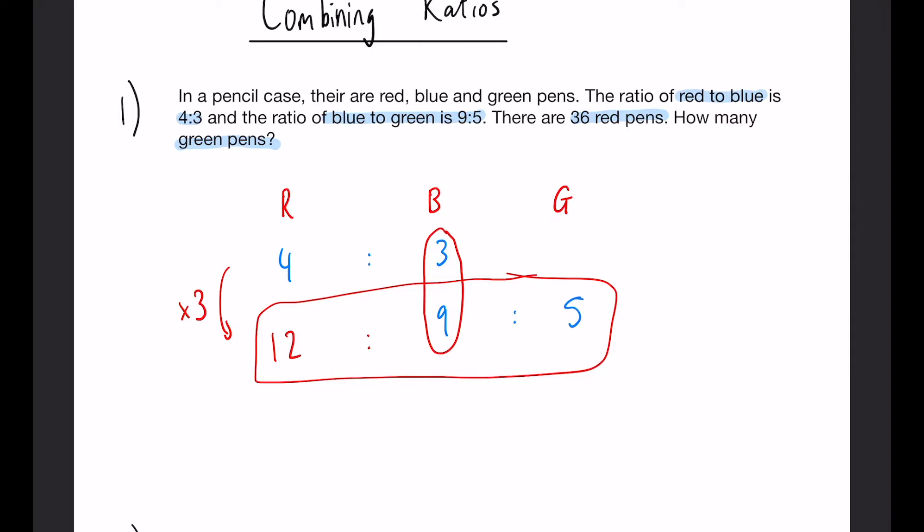Now we can use this because we know there are 36 red pens. If there are 36 red pens split between 12 units of the ratio, 36 divided by 12 gives us 3. So that means each of those buckets that we talked about in the last video has a value of 3 pens.